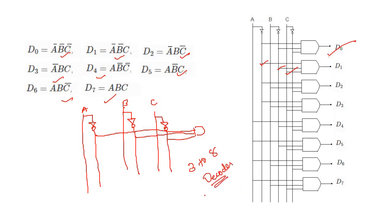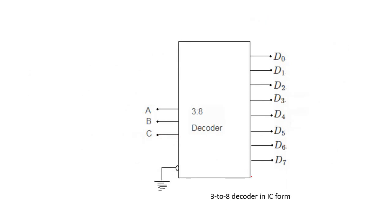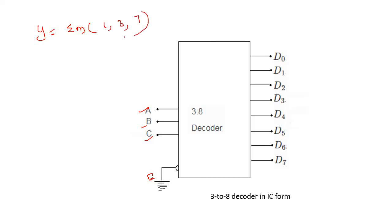This is the complete 3-to-8 decoder using logic gates, also available in IC form. The IC has 3 inputs, 8 outputs D0 through D7, and an enable pin.